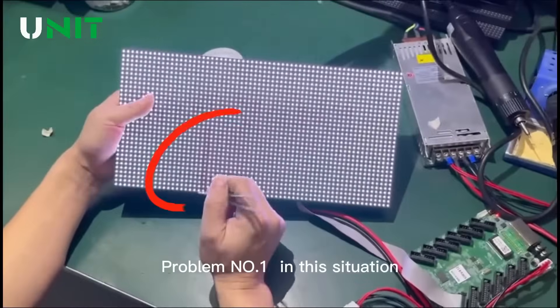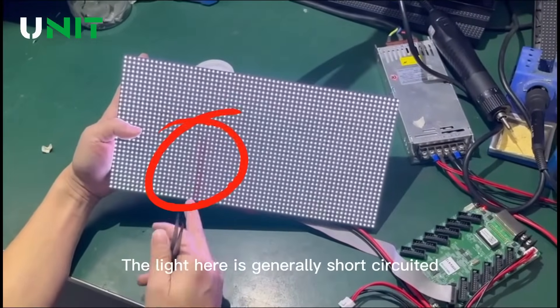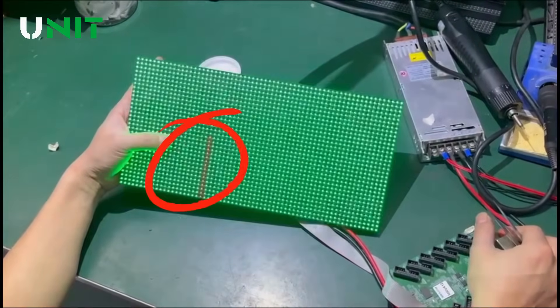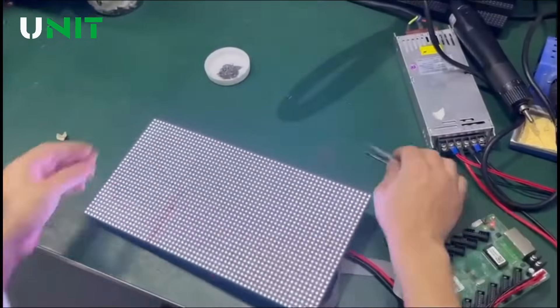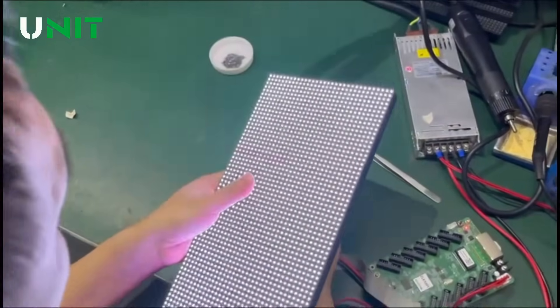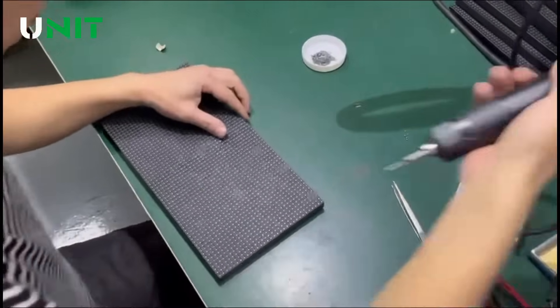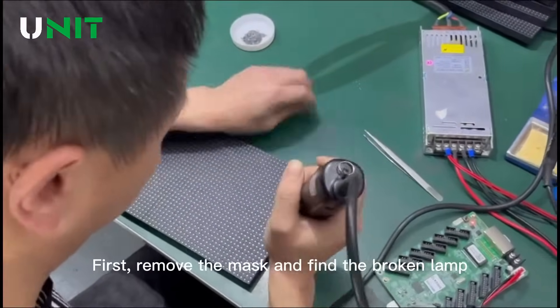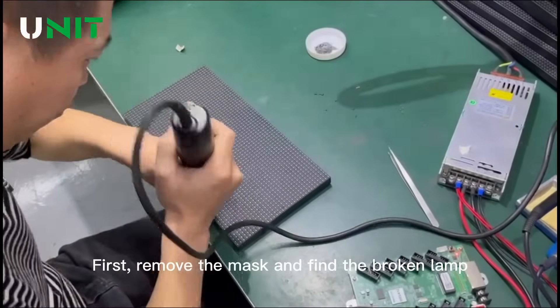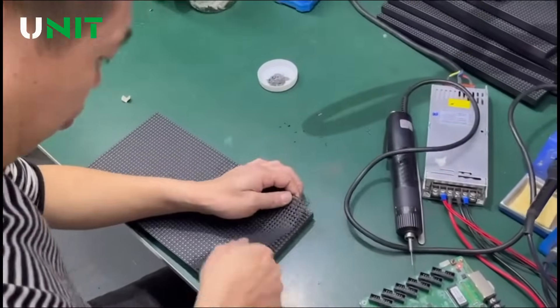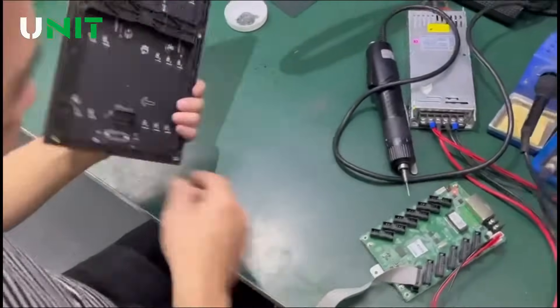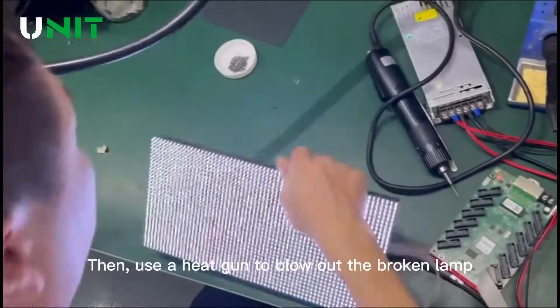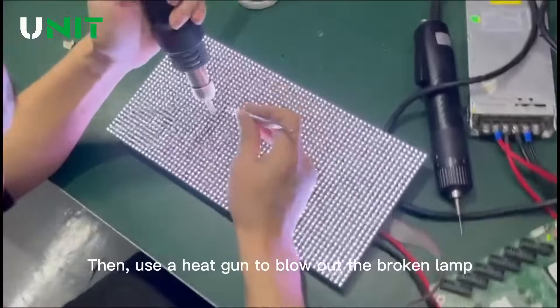Problem number one: In this situation, the light here is generally short-circuited. First, remove the mask and find the broken lamp. Then use a heat gun to blow out the broken lamp.